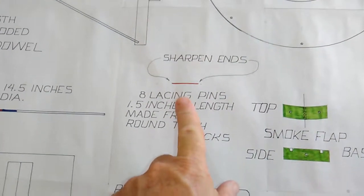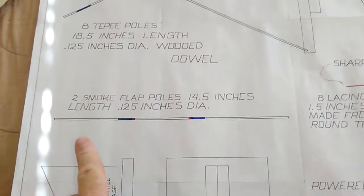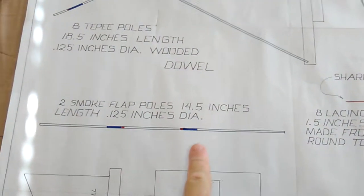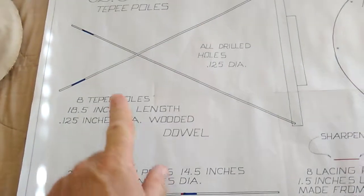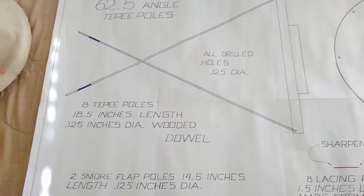Okay, so here are the lacing pins. Here are the smoke flap poles right here. There's two of those and there's eight of the poles that holds the teepee cover.